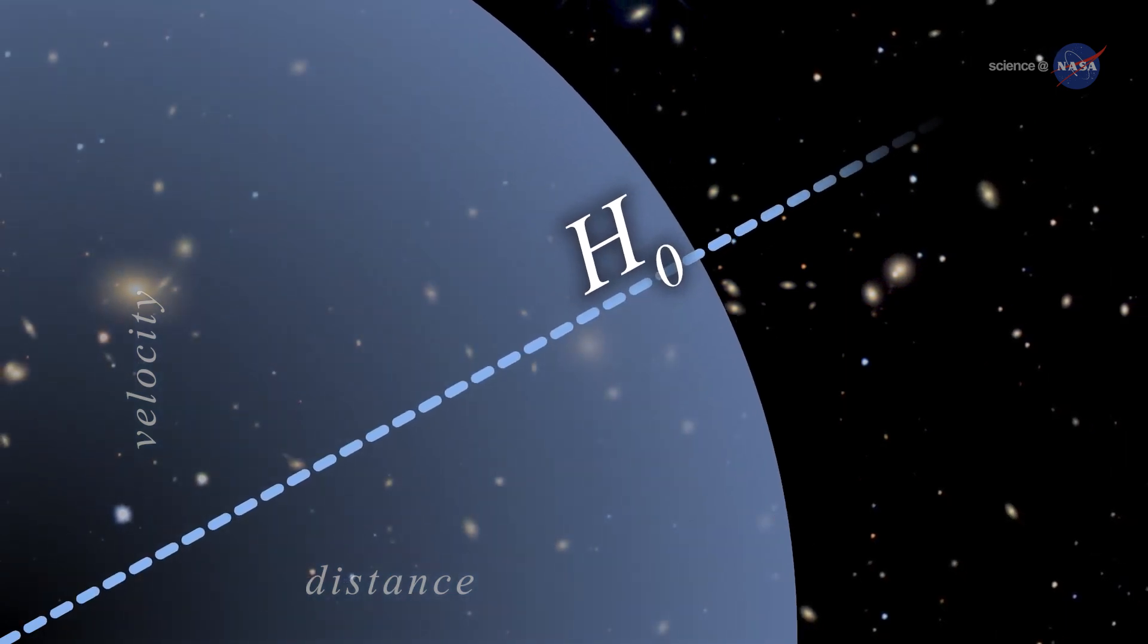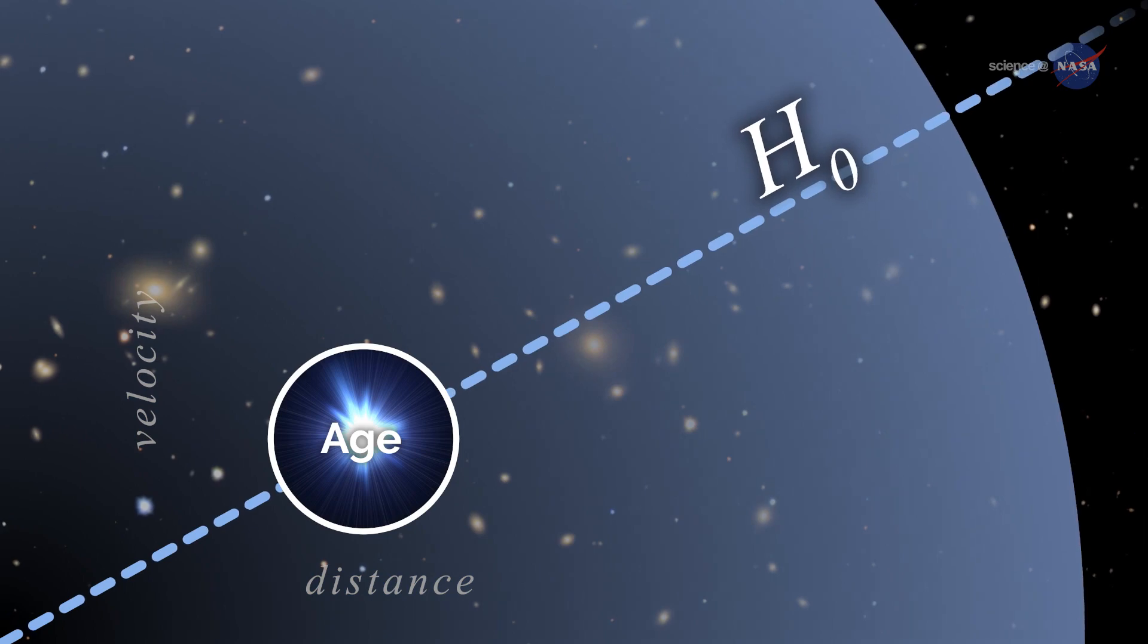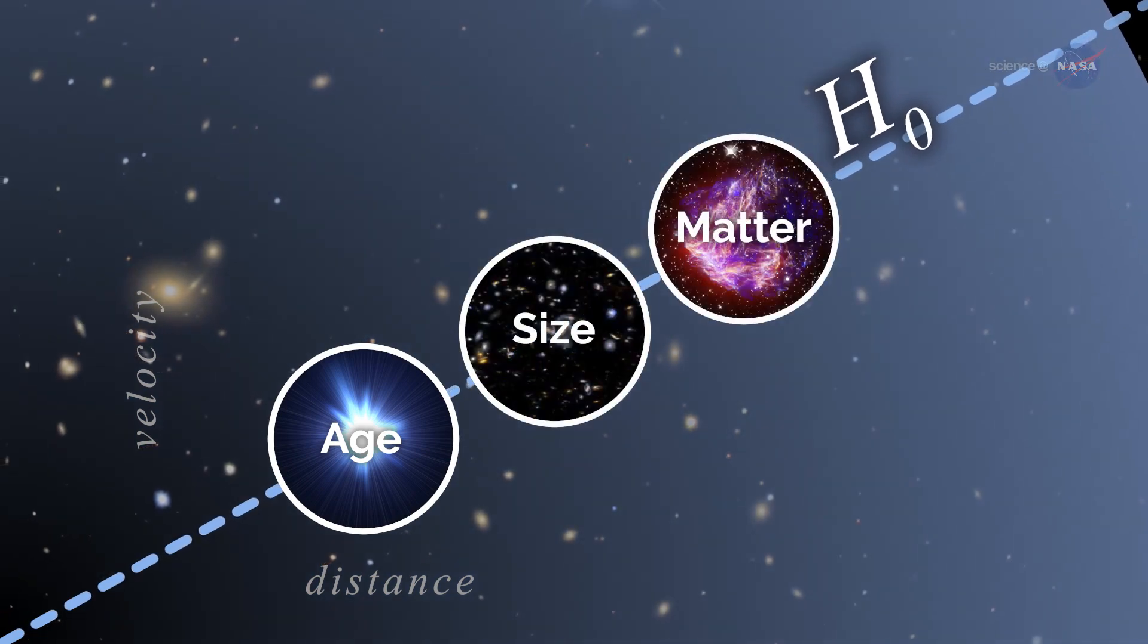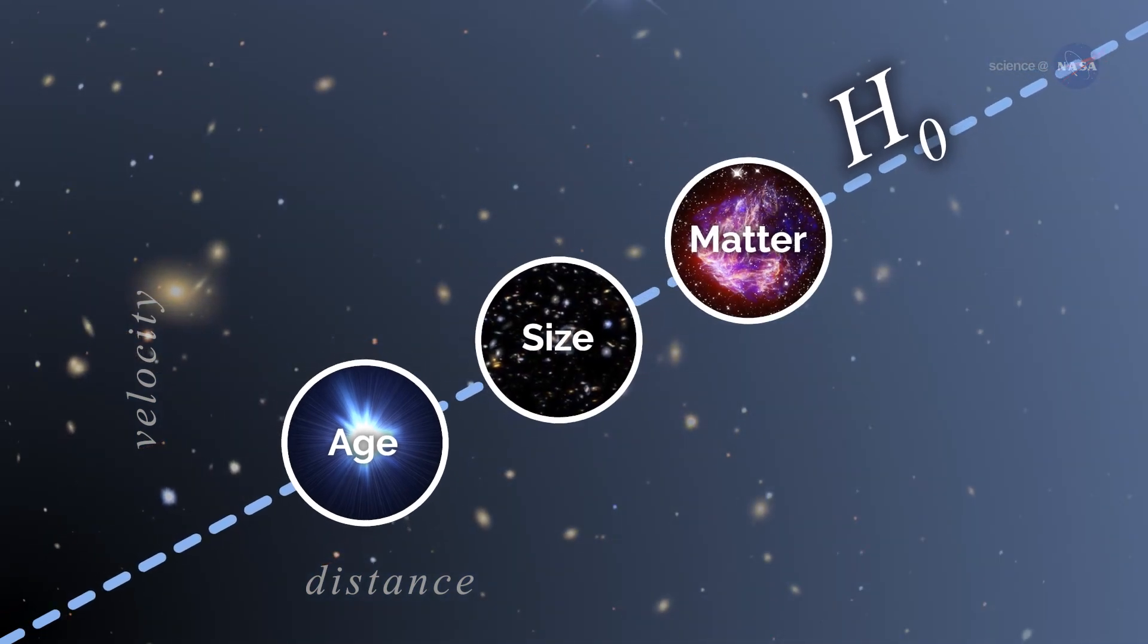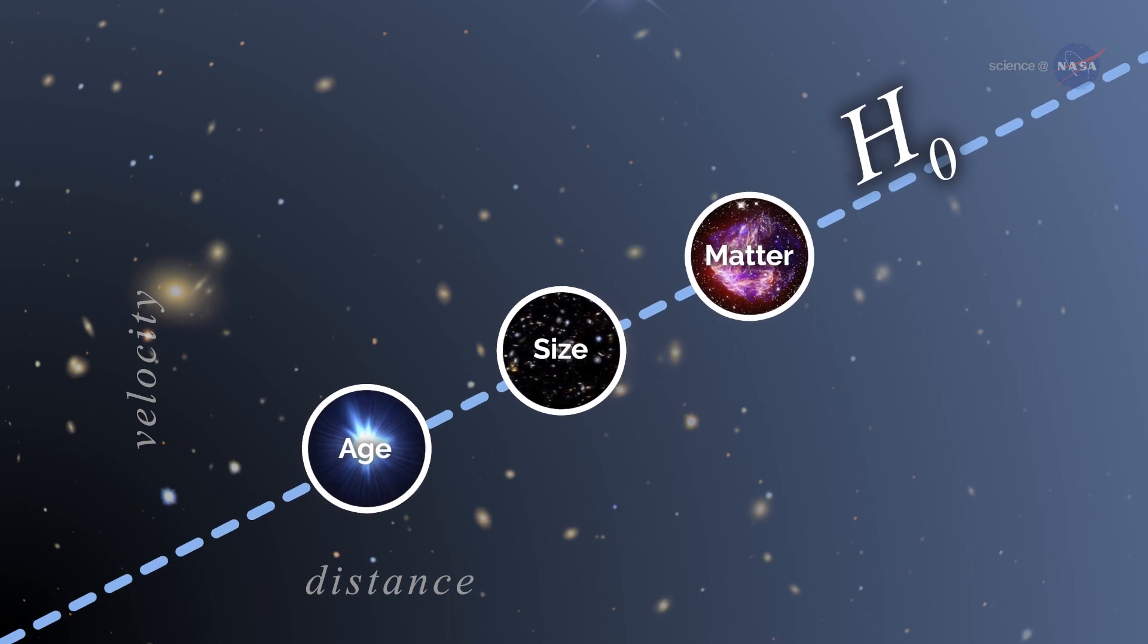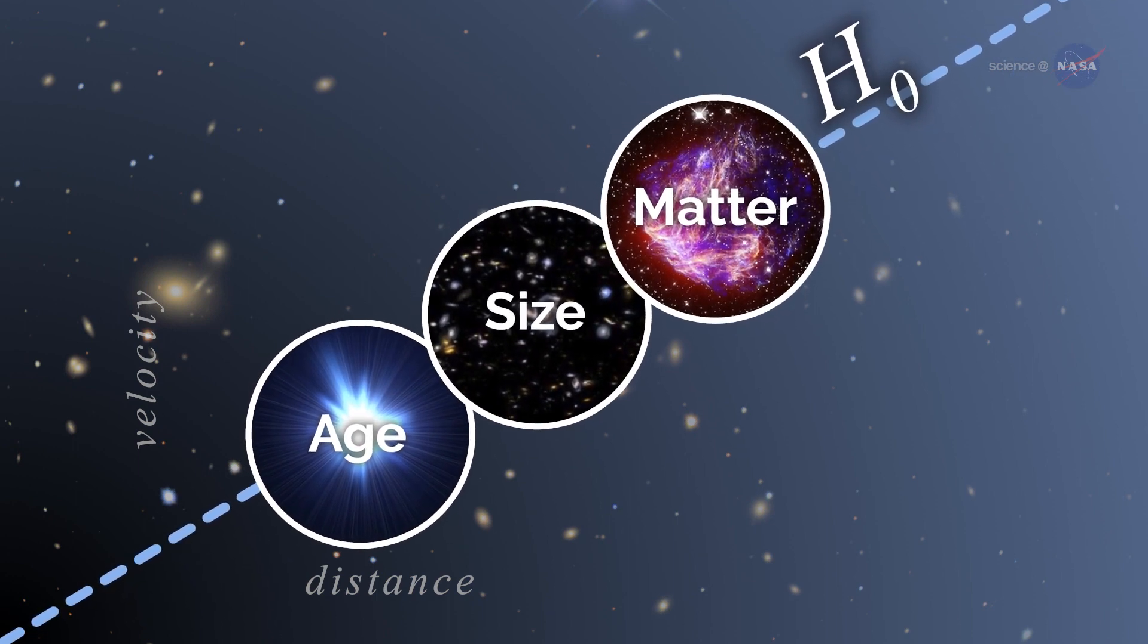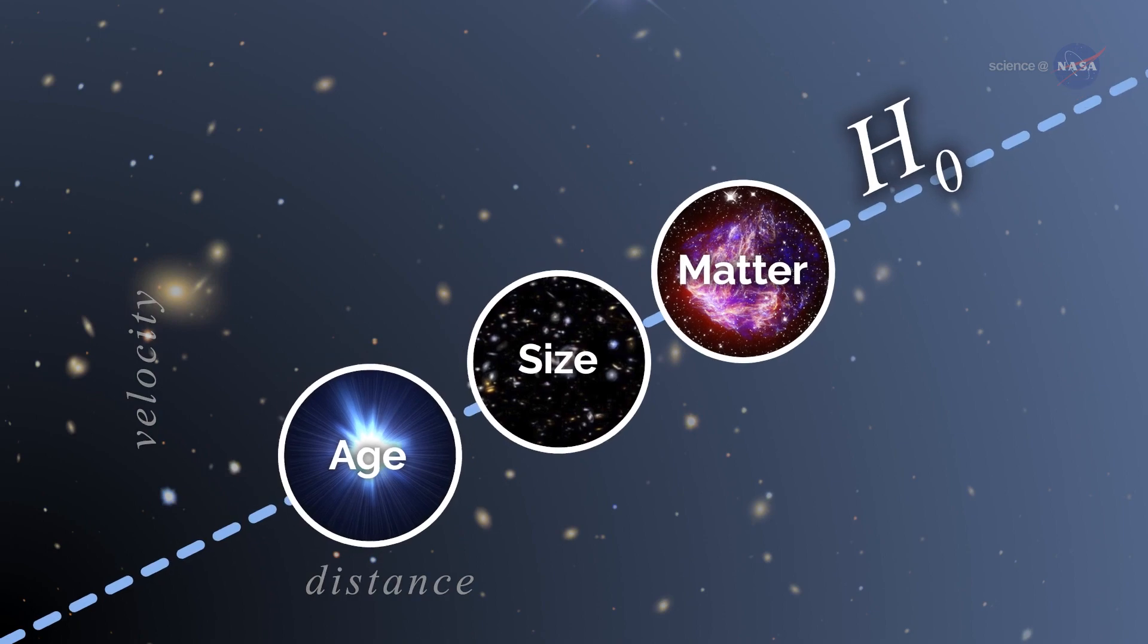H-knot factors into everything we know about the universe – how old it is, how big it is, what it's made of. If H-knot is tweaked, we get a different age of the universe, different relative amounts of matter, dark matter, dark energy, and so on.